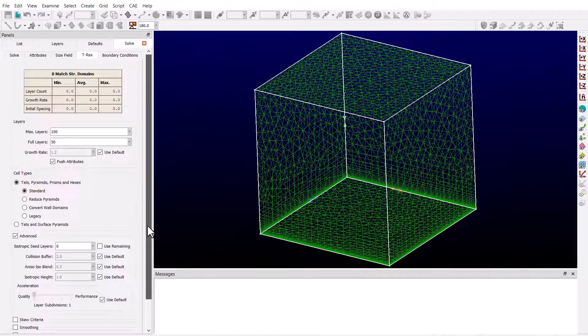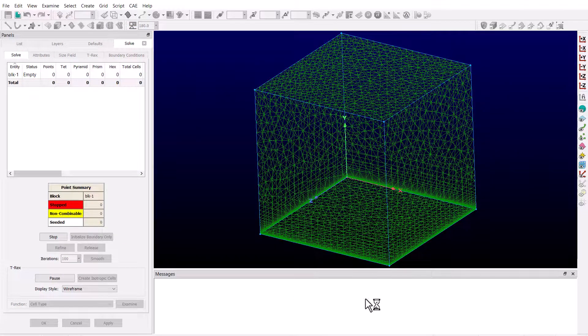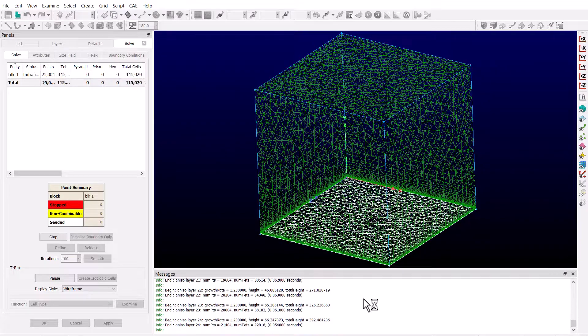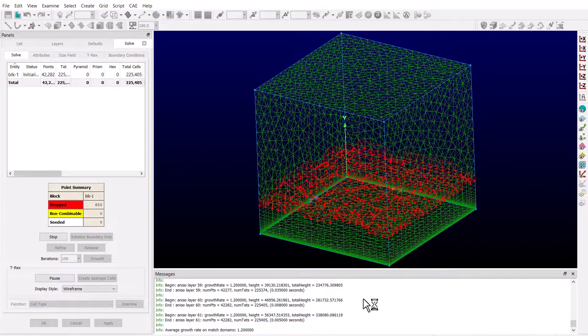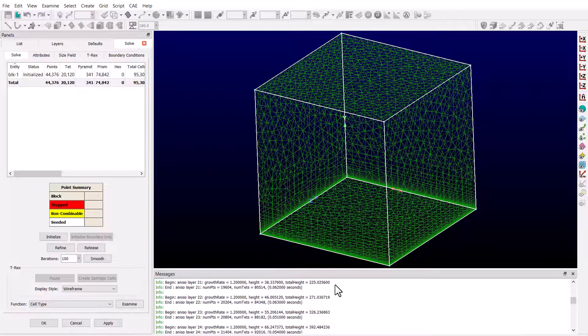Let's now go back to the solve tab and initialize this block. Okay, the block is initialized, and if I scroll up in the messages window, you'll see that we have the T-Rex algorithm advancing one layer at a time until we reach isotropy or meet other stopping conditions.